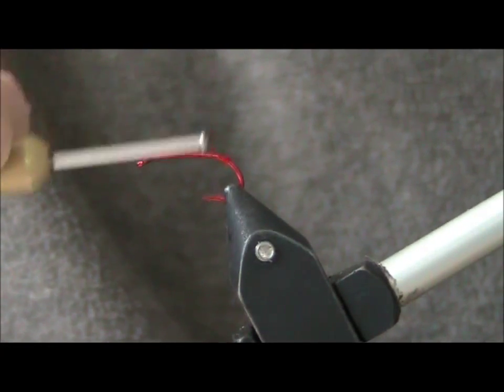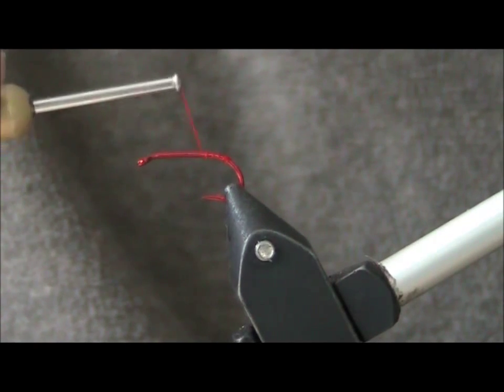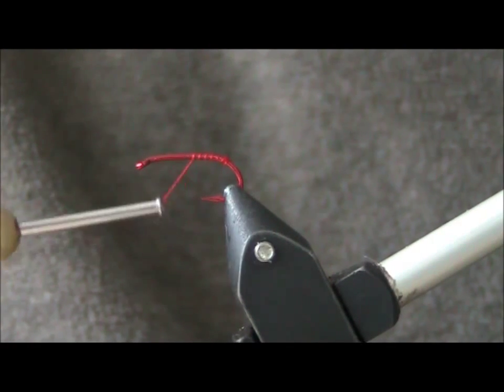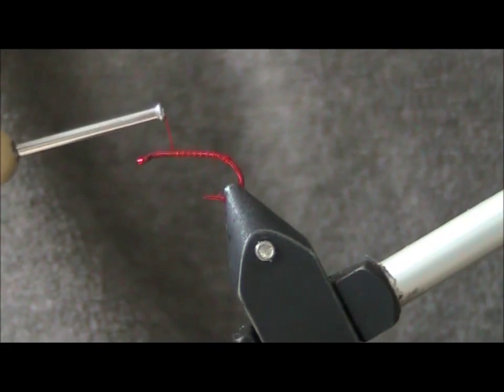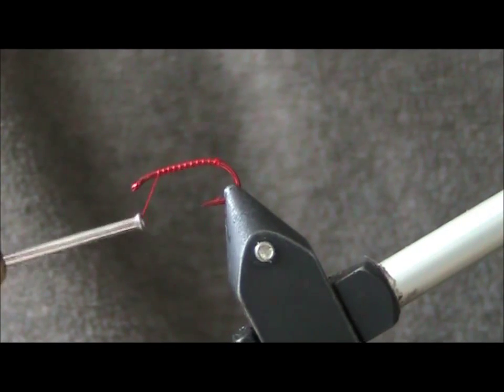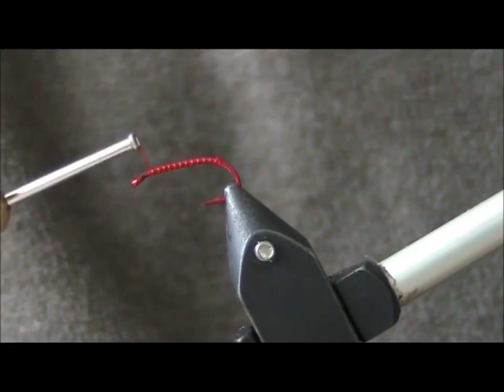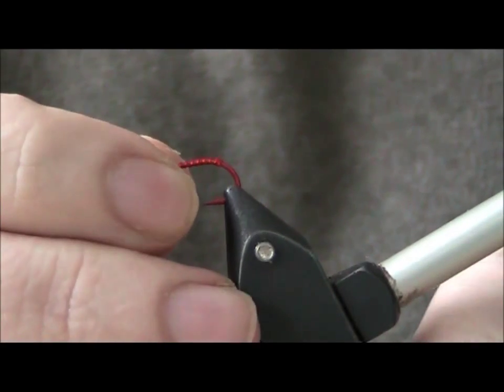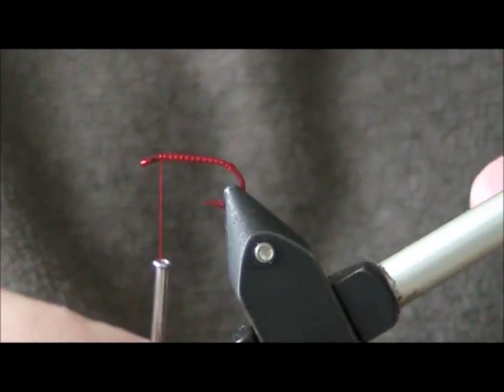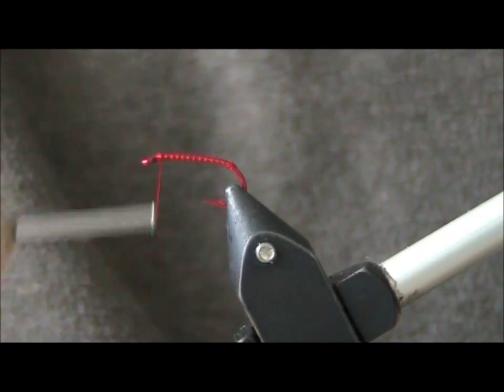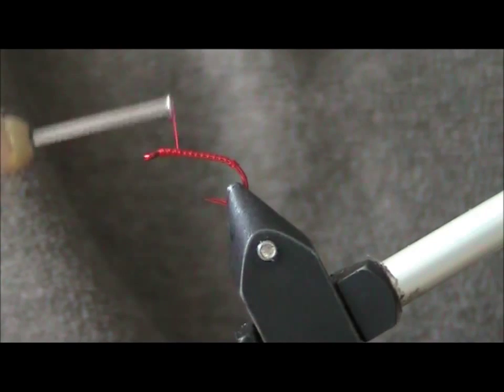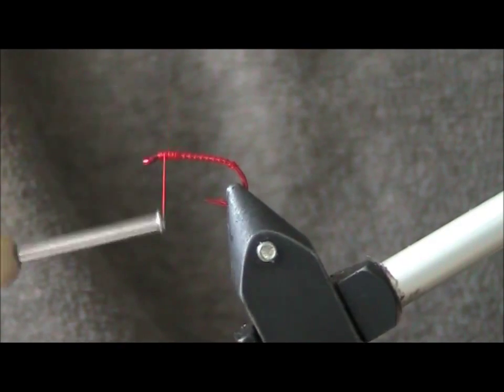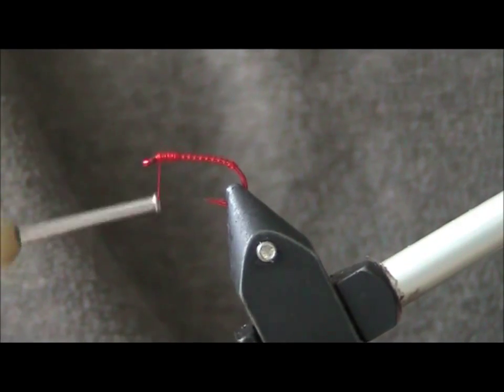Then basically make some turns up to just before the eye, about 12 open turns. Tighten the vise. Then some touching turns, wind it back, wind it back to the eye again, wind it back down.